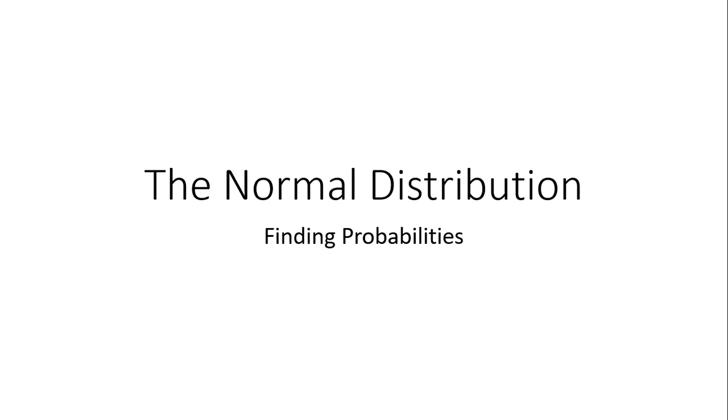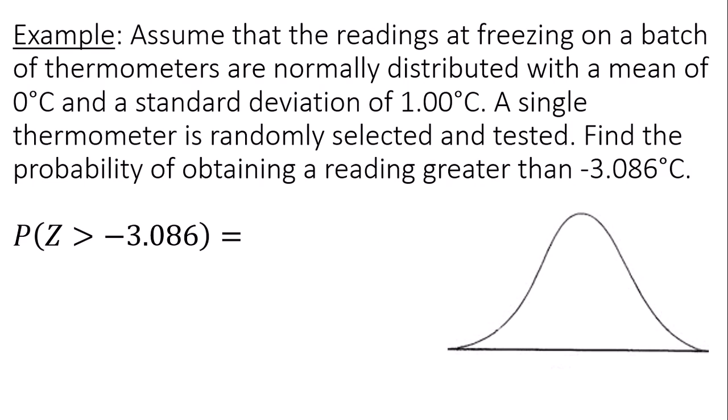This is a video on how to find probabilities using the normal distribution. Assume that the readings at freezing on a batch of thermometers are normally distributed with a mean of zero degrees Celsius and a standard deviation of one degree Celsius.